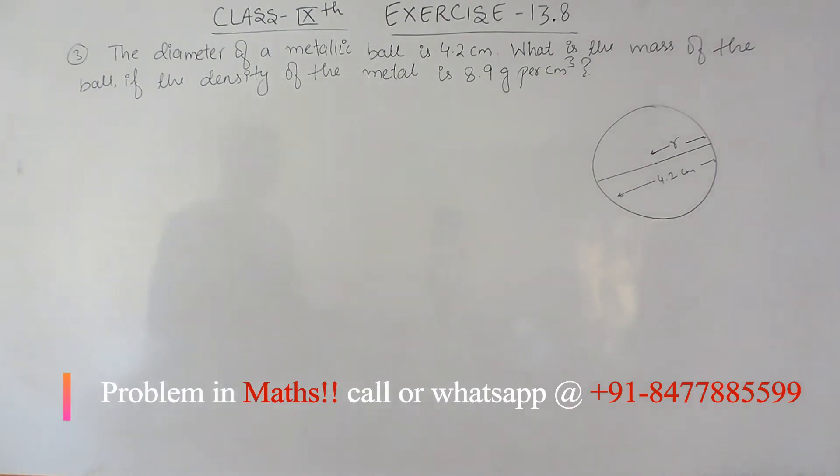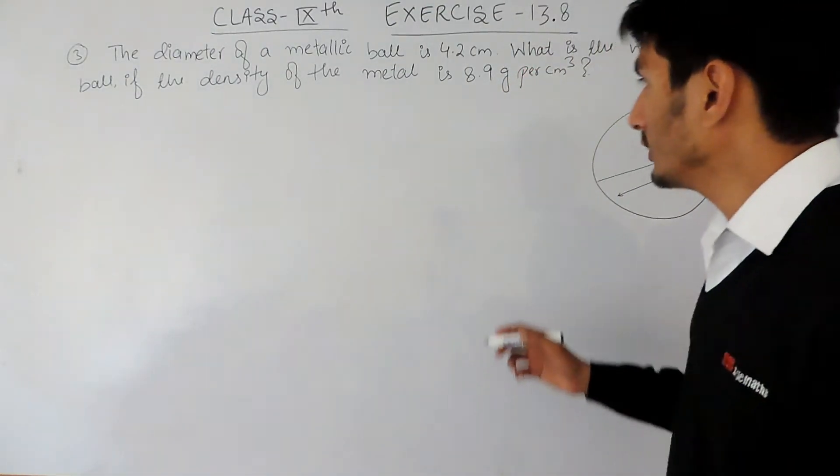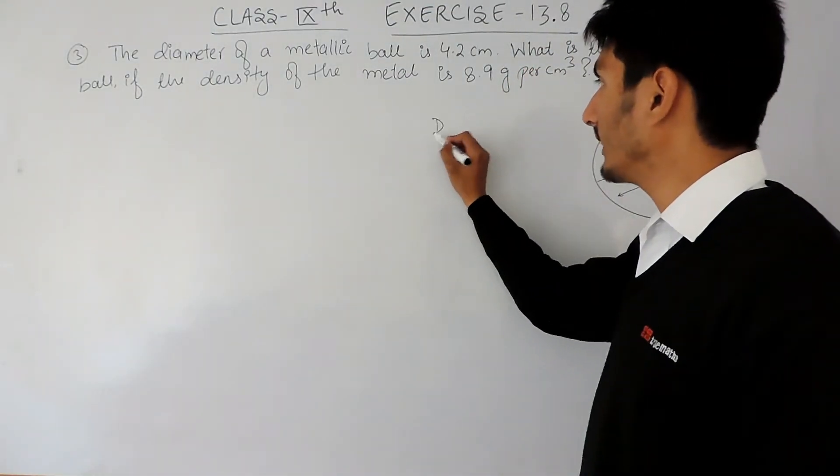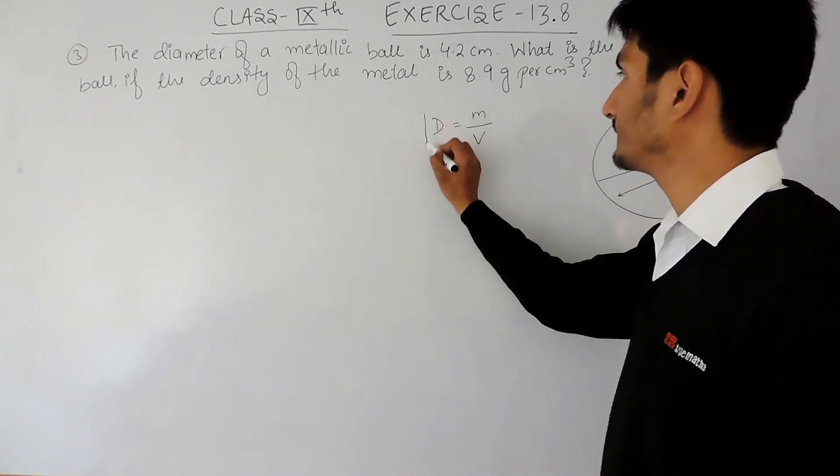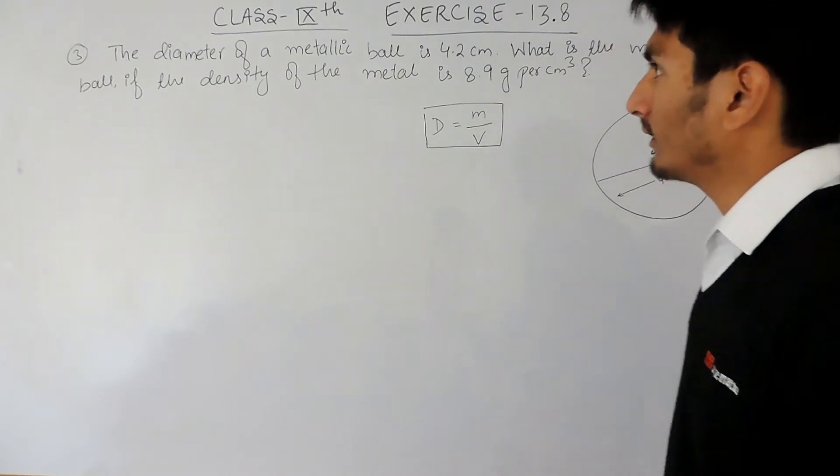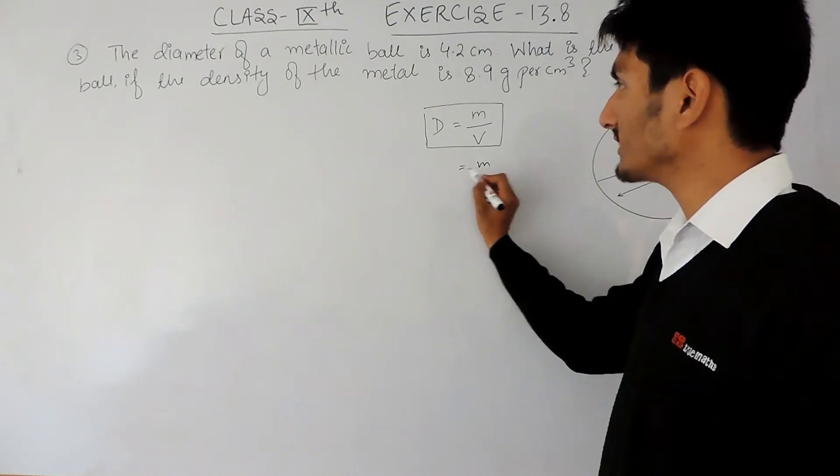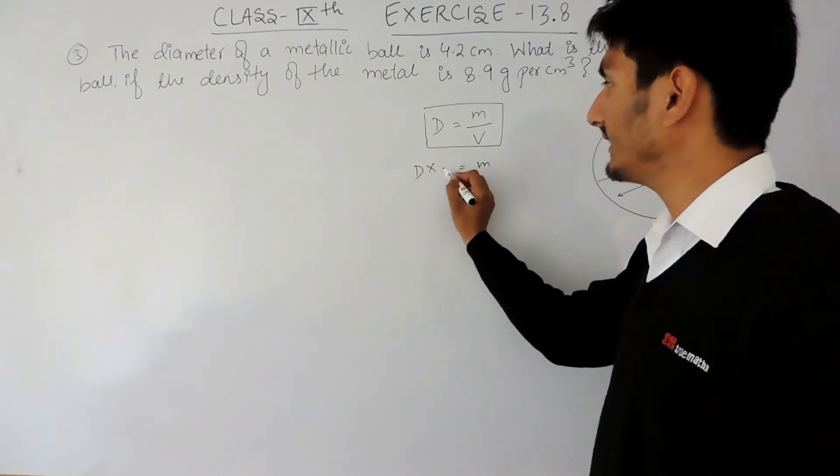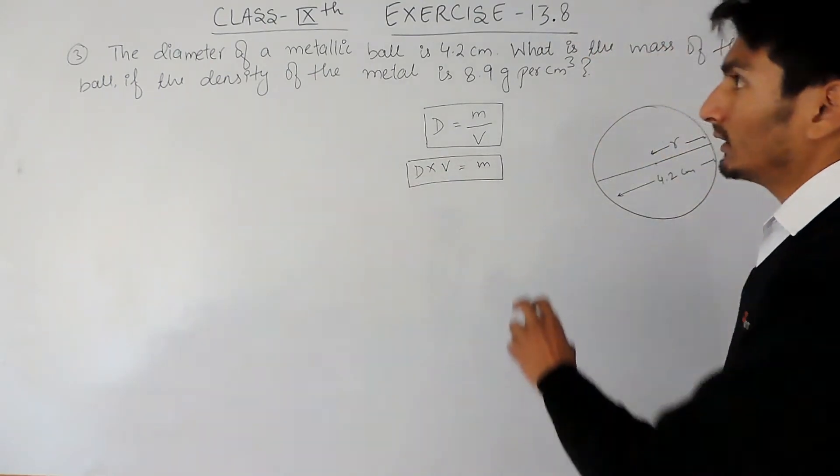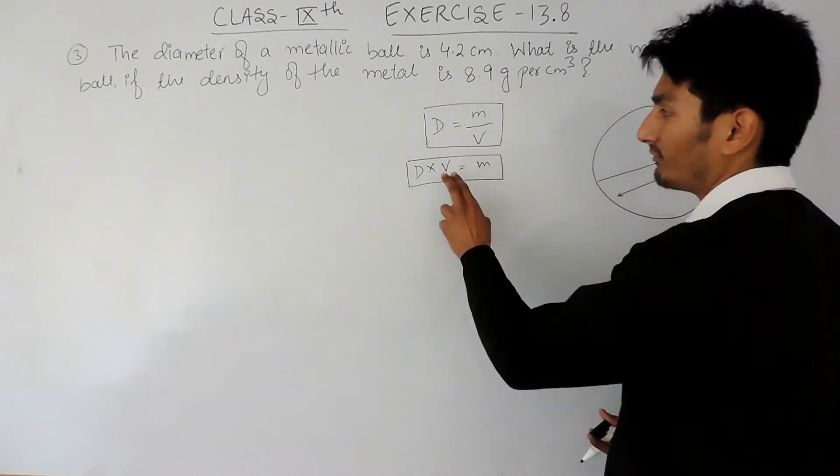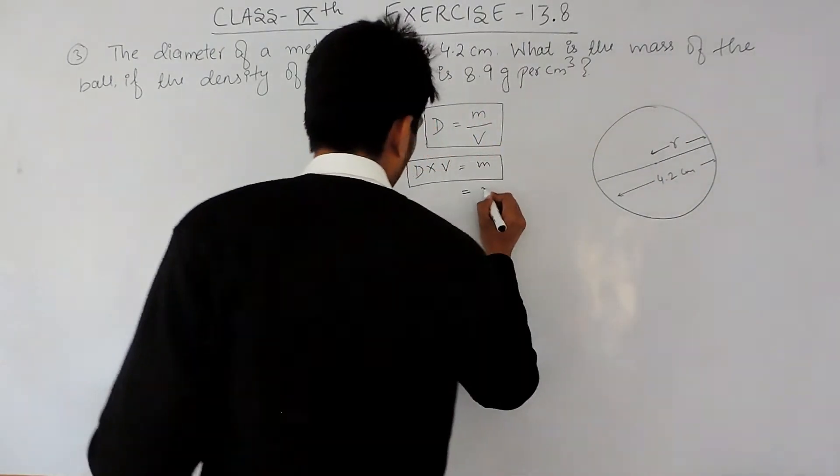So in physics we have a formula: density is equal to mass upon volume. So here we have to find the mass, so mass will be equal to density into volume. The density is given to us; we have to find the volume of this metallic ball, and multiplying these two values will give me the mass of this ball.